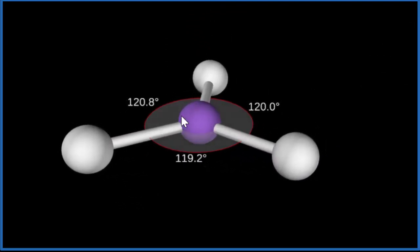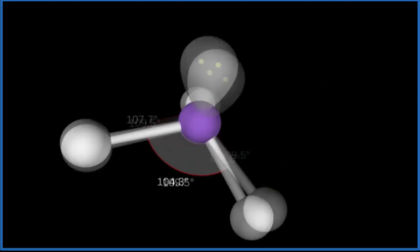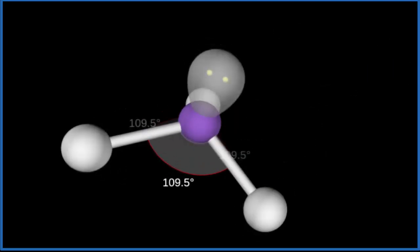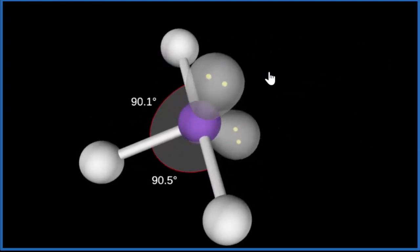But remember, we have those two lone pairs on the chlorine. They occupy space, and when we add them, they push those fluorine atoms down, and that's what gives us this T-shape here.